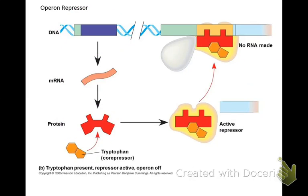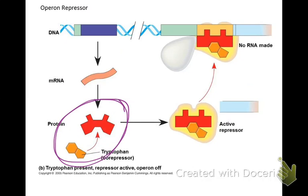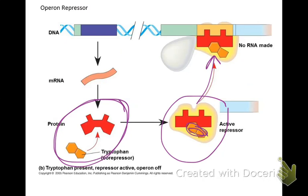This is the tryptophan operon — the trp operon. The repressor is inactive when tryptophan is absent. When tryptophan, the orange molecule, binds to the repressor, it becomes active and binds to the DNA, blocking transcription. So the orange tryptophan is like an on-off switch: orange binds to red, red binds to DNA.